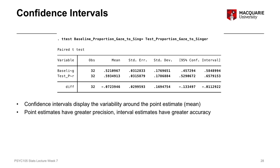Whereas if we use a confidence interval to represent the bounds that we think represent where the real population mean will be, then that's likely to have greater accuracy because it's less precise.